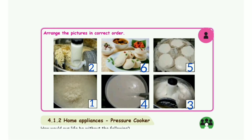Then take page number 127. Arrange the pictures in correct order. The 1st one is the 4th option, 2nd one is the 1st option, 3rd one is the 6th option, 4th one is the 5th option, 5th one is the 3rd option, and 6th one is the 2nd option.